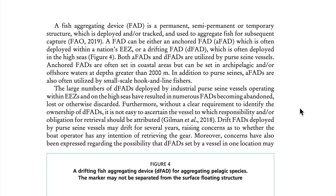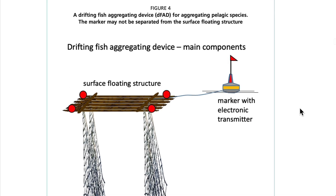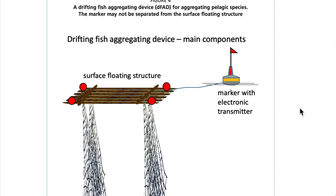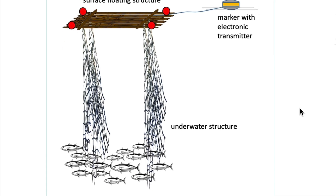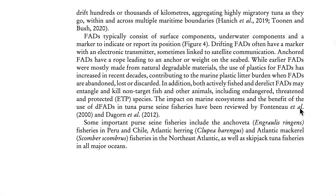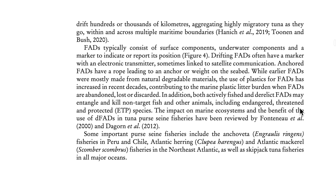The large numbers of drifting FADs deployed by industrial purse seine vessels operating within exclusive economic zones and on the high seas have resulted in numerous FADs becoming abandoned, lost, or otherwise discarded. See Figure 4, a drifting fish aggregating device for aggregating pelagic species. The marker may not be separated from the surface floating structure. Drifting FAD main components include: surface floating structure, marker with electronic transmitter, and underwater structure.